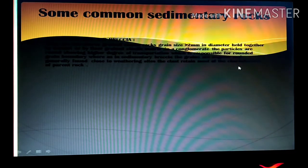In a conglomerate, the particles are round showing higher degree of transportation which is responsible for rounded grain boundary. Whereas, in sedimentary breccia, the grains are angular and generally found close to the weathering site. The clasts retain most of the characteristics of the parent rock.